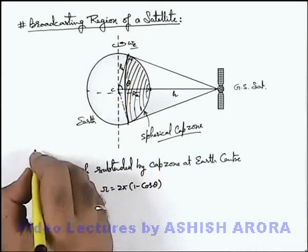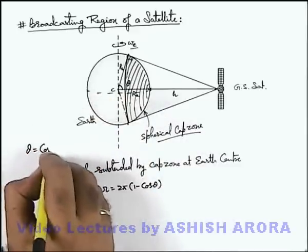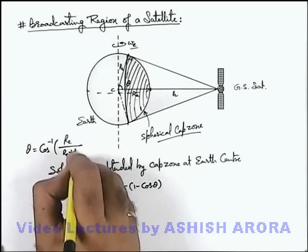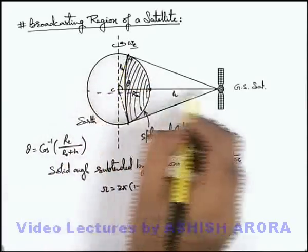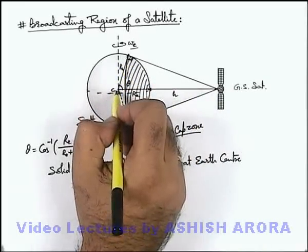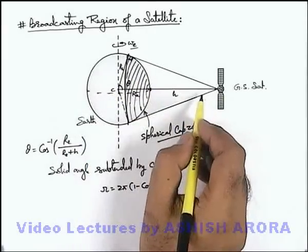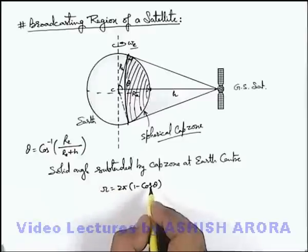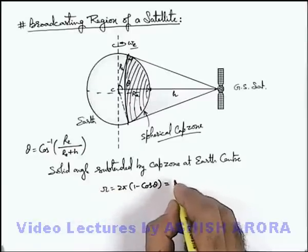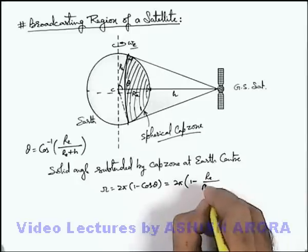The value of theta can be written as cos inverse of (R_e / (R_e + h)), since this is a right angle triangle in which the base is R_e and the hypotenuse is R_e + h. So if we substitute the value of cos theta, the solid angle we get is 2π(1 − R_e / (R_e + h)).